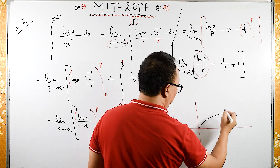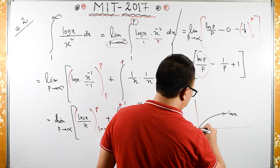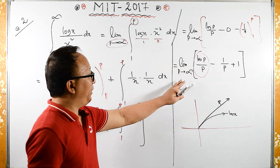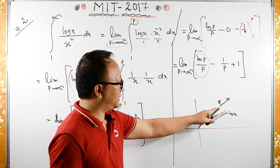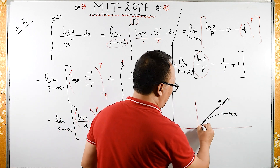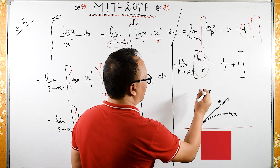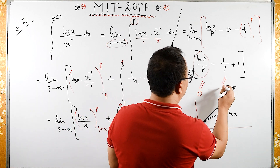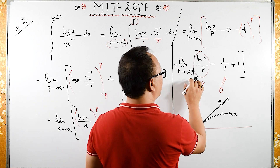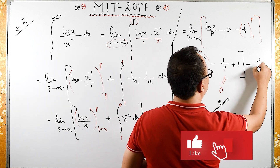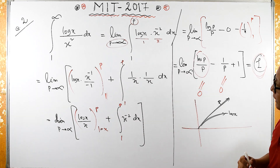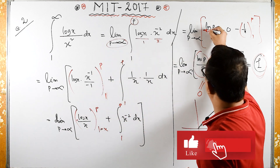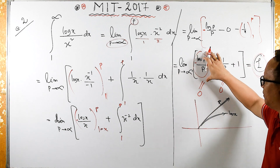Now let us examine the nature of log(p)/p as p tends to infinity. If we compare y = log(p) versus y = p (a straight line), the straight line dominates the logarithm, so log(p)/p tends to 0. Similarly, 1/p also tends to 0 as the denominator dominates. So both terms with p vanish, and we are left with the limit equal to 1.